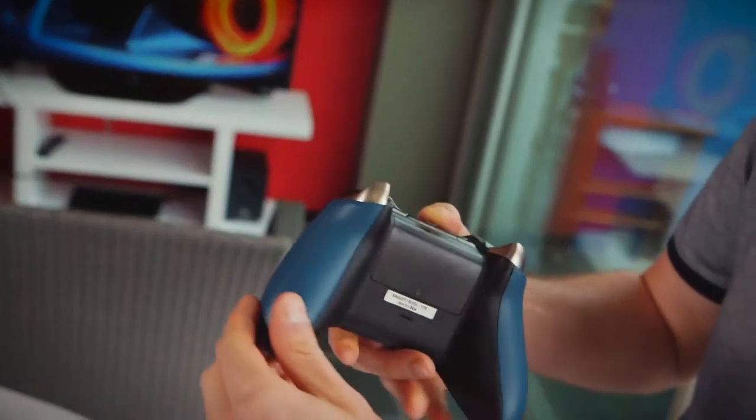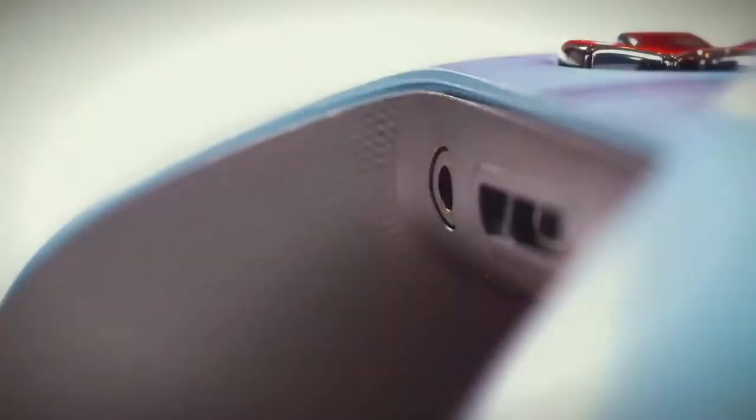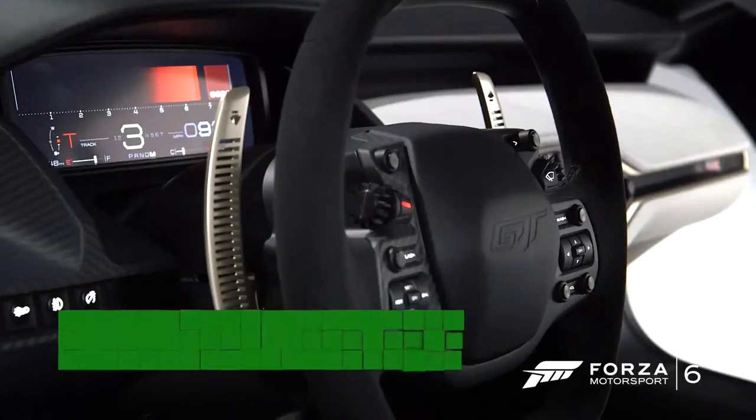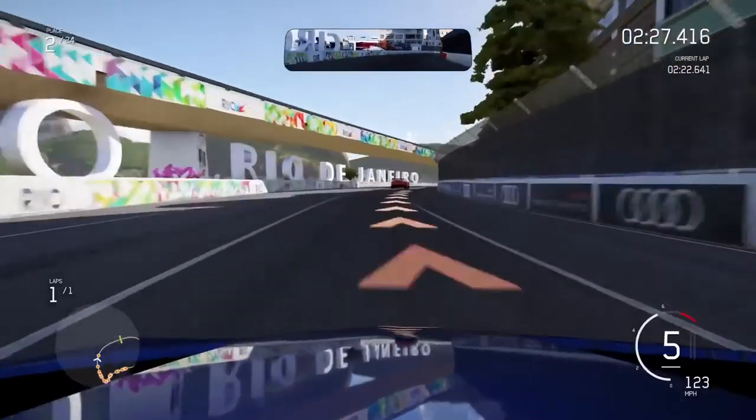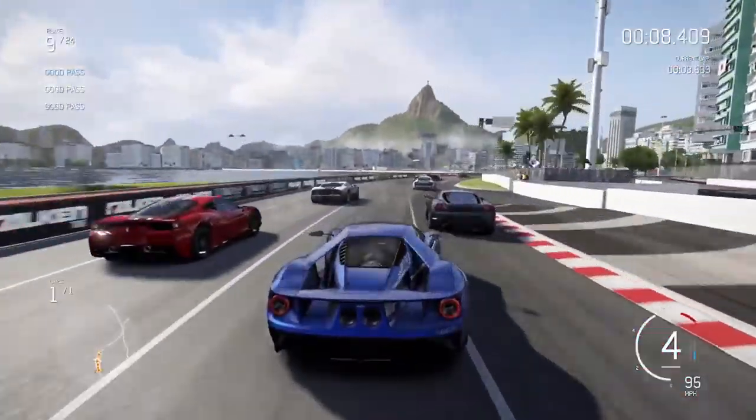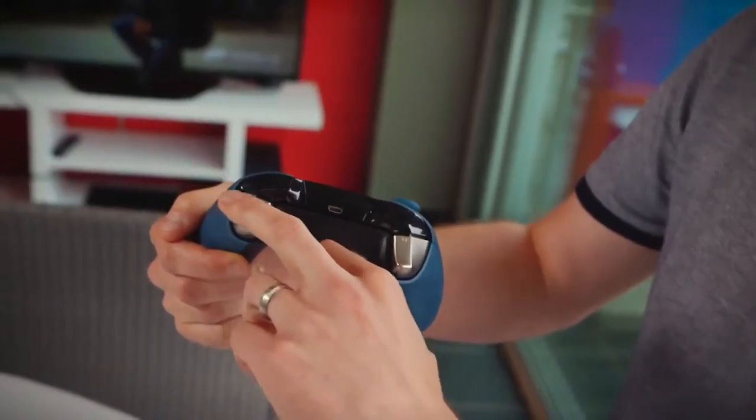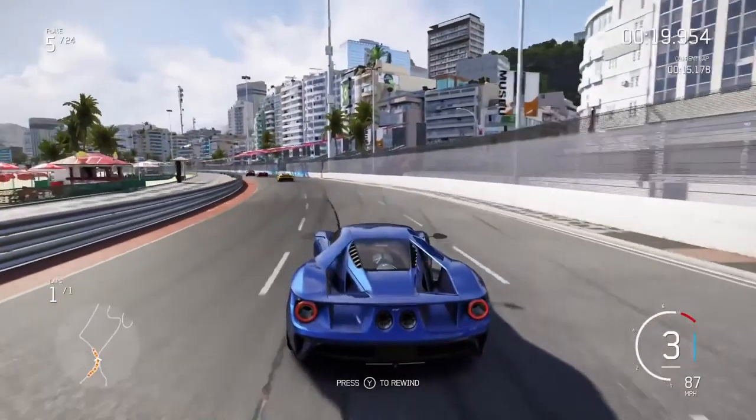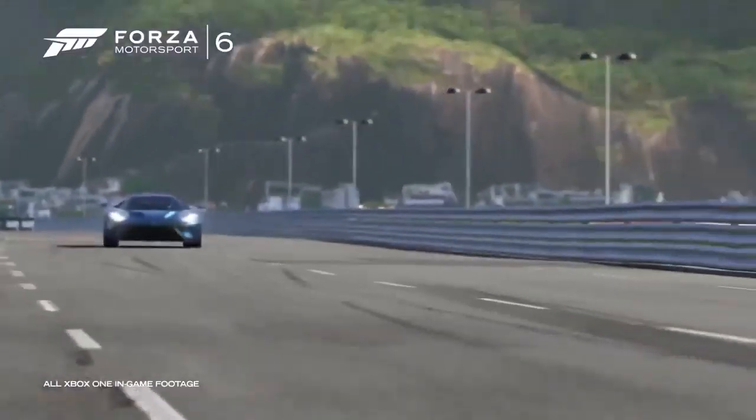Turn the controller over and you can see the controller grips have this incredible knurled finish which feels just like a steering wheel and will definitely give you the racing edge during an intense Forza 6 session. And the triggers are titanium colored with a lovely satin finish. These have been inspired by the titanium finish in the headlights of the new Ford GT.